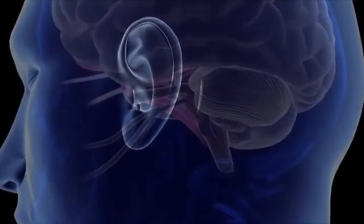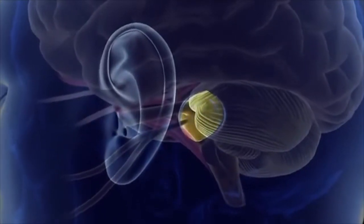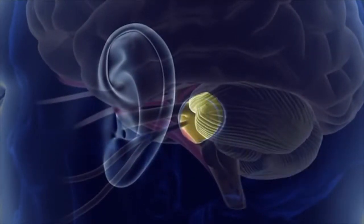A small incision in the skin behind the ear is made and a nickel-sized opening in the bone is created. The lining of the brain, called the dura, is opened.